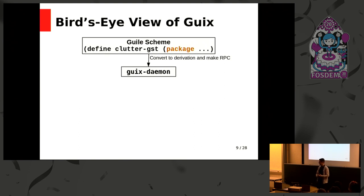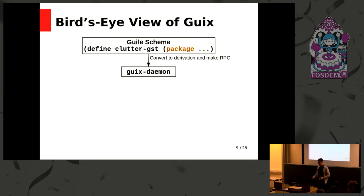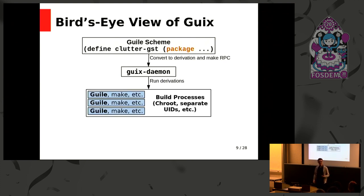A derivation is like a package in that it has inputs required to build it, an output which is the built product, and it exactly specifies the steps needed to build it, like make and make install. The difference between a derivation and a package is that other factors, such as the platform for which you're building, go into determining the output hash. The daemon executes the build in a tightly isolated environment — very much like a chroot — with a different namespace and unique UIDs. The code that drives the build is Guile Scheme code.